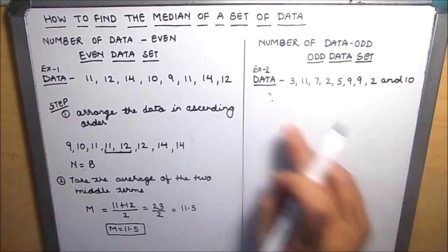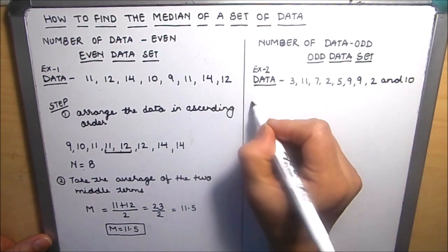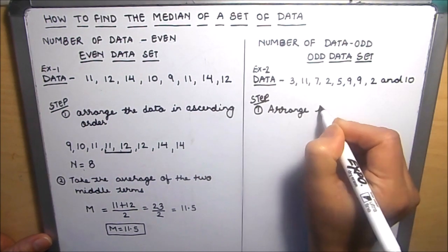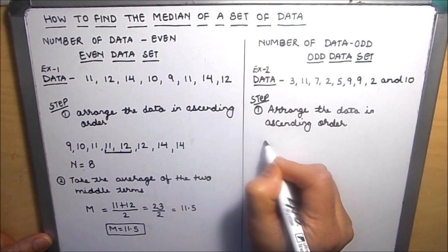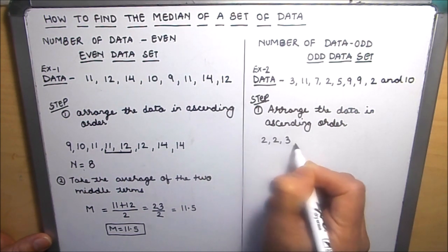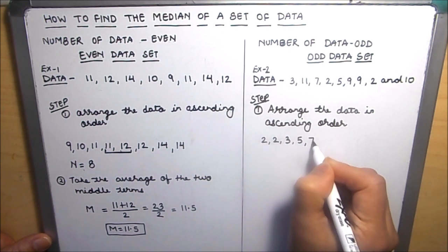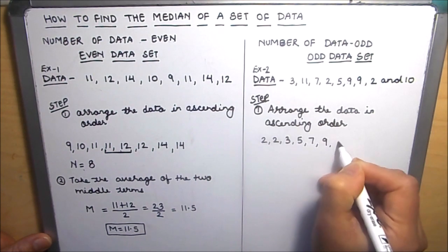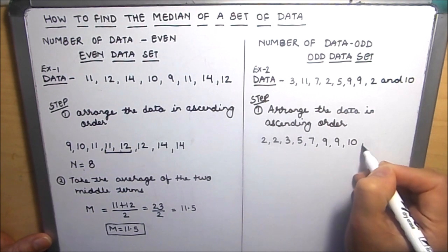Here we have been given a data set where the number of terms is odd. Our first step here is to arrange the data in ascending order. So we will arrange the data set: 2, 2, 3, 5, 7, 9, 9, 10, and 11.